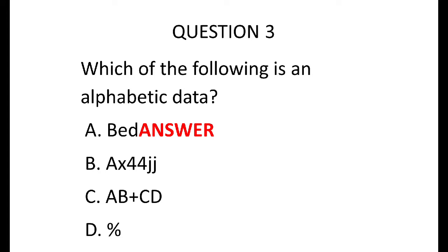Question three says: which of the following is alphabetic data? The correct answer is A, which is B, E, D. Option B contains a number, so it's alphanumeric. Option C is also alphanumeric. And option D is not alphanumeric because it contains a numeric symbol showing percentage of a number.